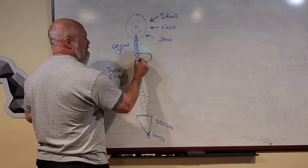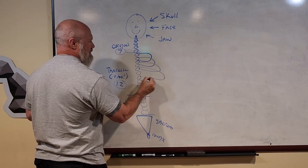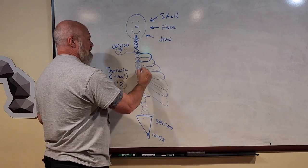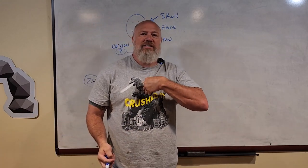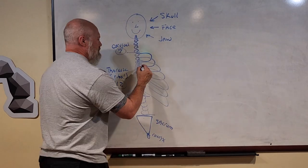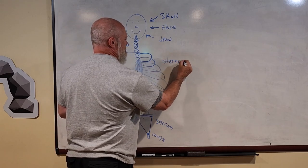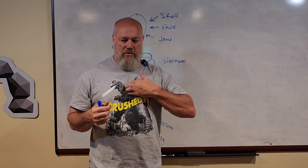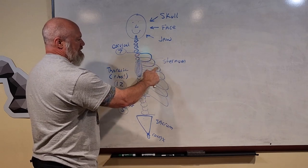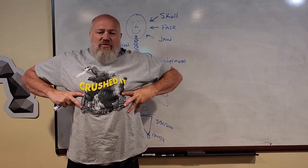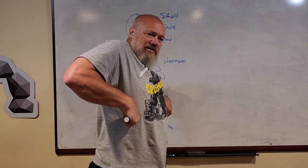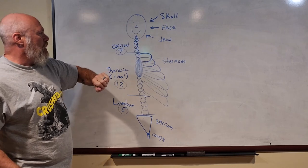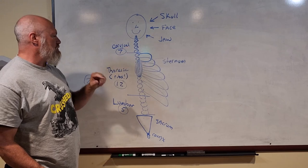Along your thoracic vertebrae, the ribs start in the back and come all the way around to the front, where they attach to a flat bone called the sternum — the breastbone — right in the center of your chest. Right behind the sternum is your heart. Your ribs are on both sides, creating a space for your lungs to sit under them. You can feel your ribs on the side and trace them around to the sternum.